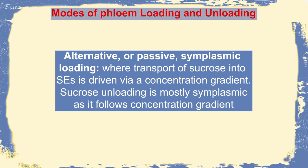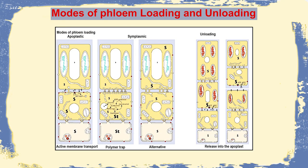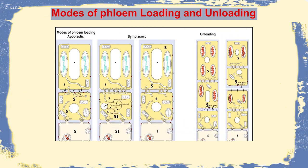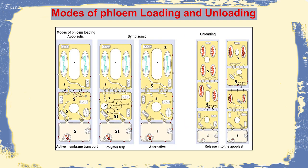The flow is unidirectional, though phloem is capable of both upward and downward or lateral flow. The third way is passive or alternative symplasmic loading, where transport of sucrose is driven via a concentration gradient and unloading is symplasmic following the concentration gradient — from sieve tube where sucrose is higher, to the sink where less sucrose is present. Sometimes the companion cell-sieve tube complex is symplasmically isolated, and an active step of apoplastic unloading takes place where sucrose is retrieved, commonly observed in the maternal-filial interface where assimilates leave the maternal symplasm and are taken up by the filial tissue.